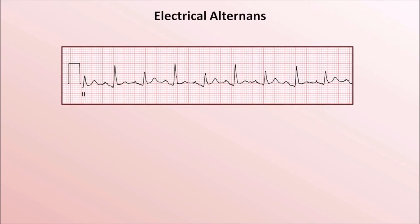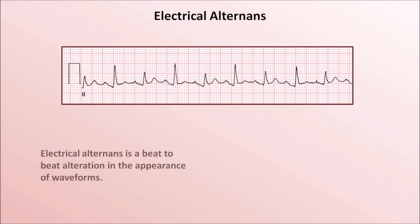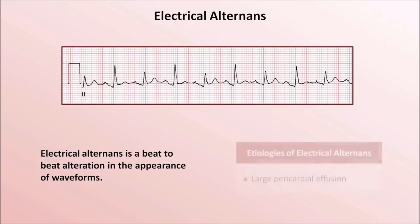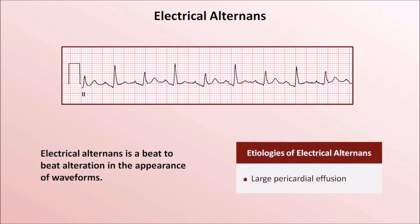The last abnormality of this video is electrical alternans — a beat-to-beat alteration in the appearance of waveforms. It most commonly manifests as a tall R-wave alternating with a short one. The only significant cause of this is a large pericardial effusion in which the heart literally rocks back and forth within a distended pericardial sac with each contraction.